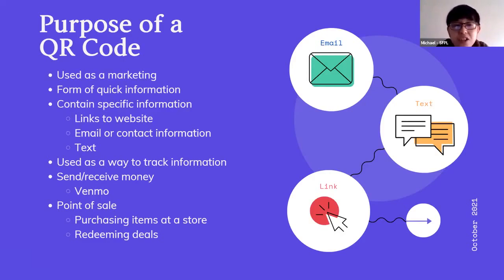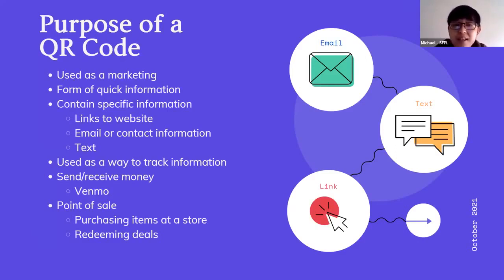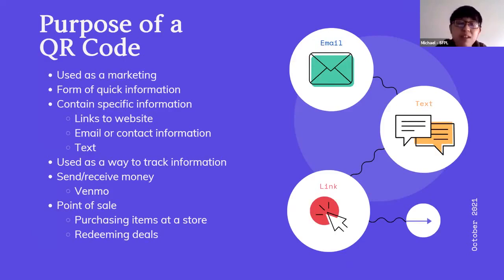QR codes are also used as a point of sale. You can set up an account with Venmo and go to a store that accepts QR codes as a form of payment — you scan the QR code and they charge whatever account is associated with it. Also, certain stores use QR codes to redeem deals: they give you a QR code, you let the cashier scan it, and they give you a sale item or free item.